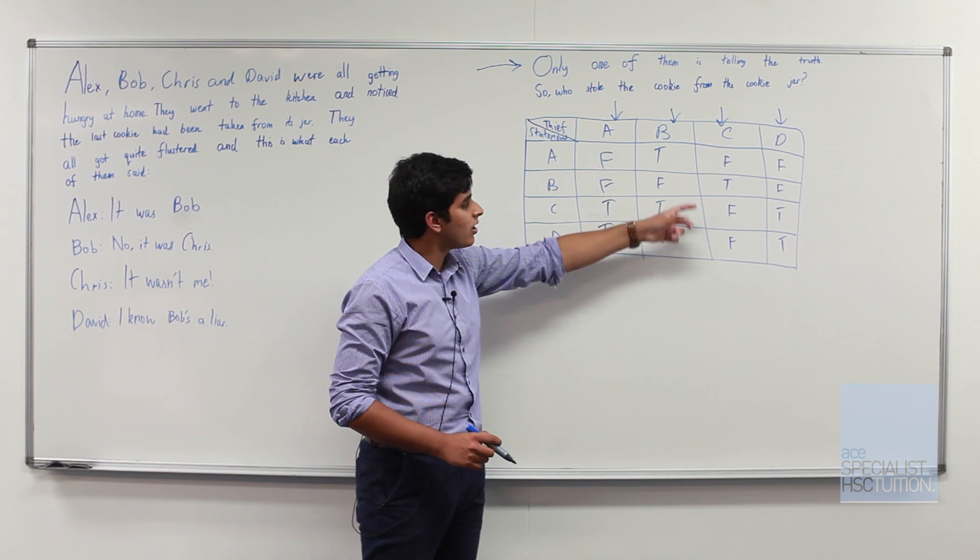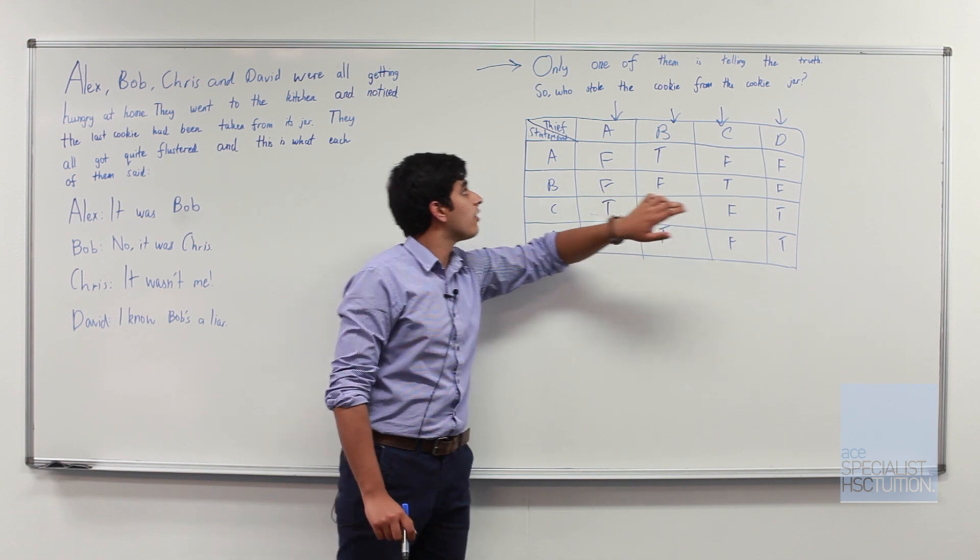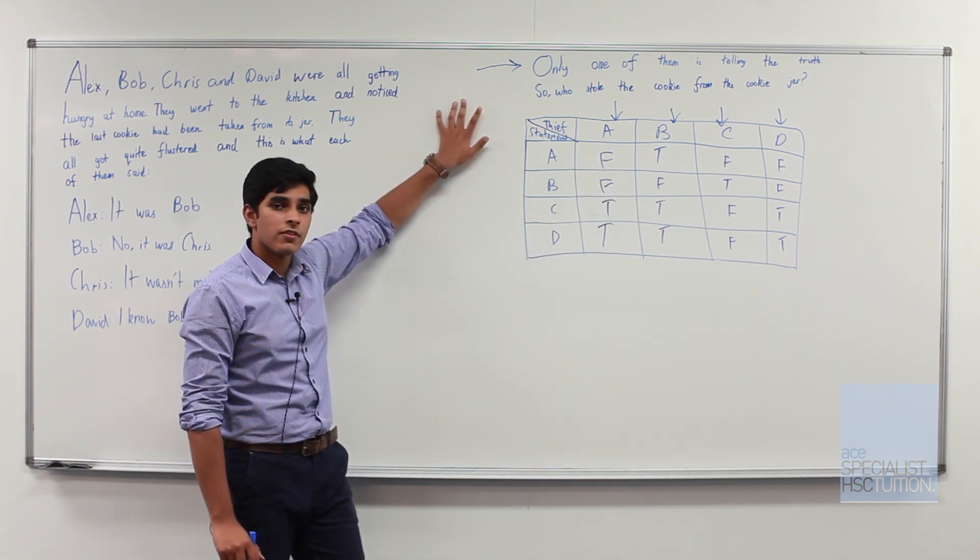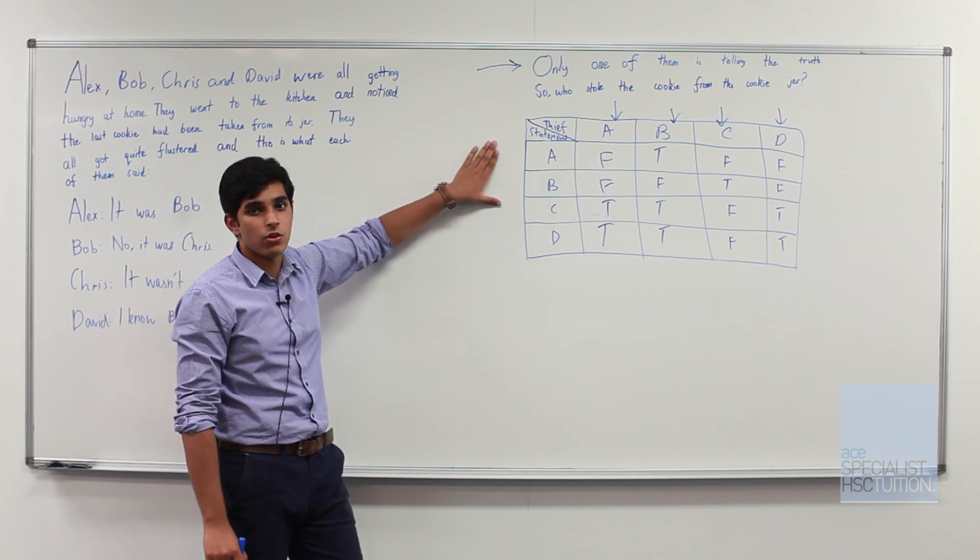We look at C we have three people telling a lie and only one of them is telling the truth. Therefore we know that for this particular situation to work C would have to be the person who stole the cookie.